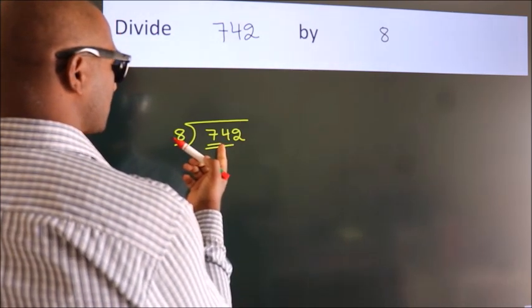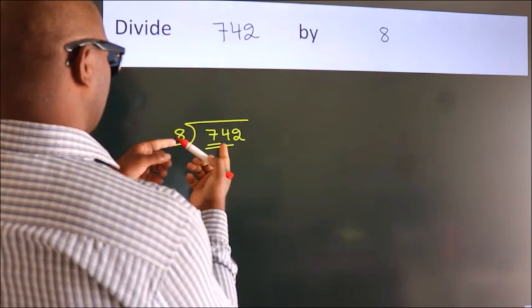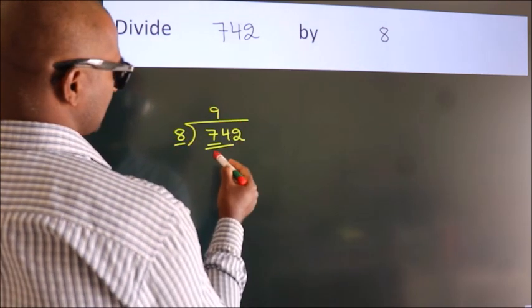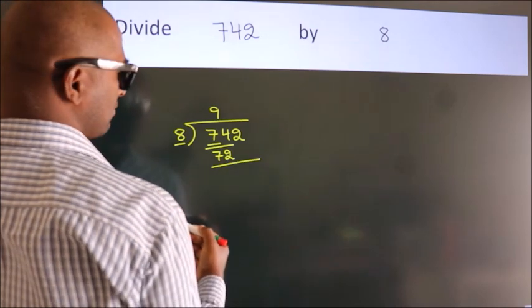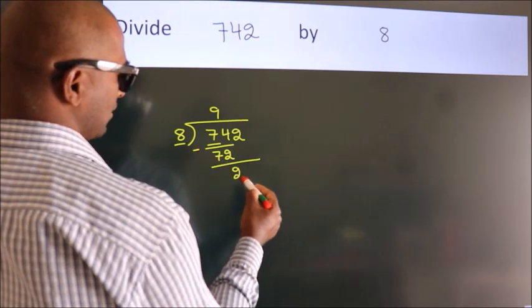A number close to 74 in the 8 times table is 8 nines, 72. Now we should subtract, we get 2.